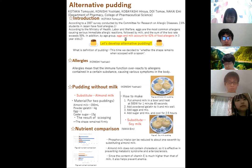They are almond milk pudding and soy milk pudding. The ingredients for two almond milk puddings are 200ml almond milk, 4g powdered gelatin, 1 egg and 15g caster sugar. Next, I will explain how to make it. First, put almond milk in a bowl and heat at 500W for 1 minute 40 seconds. Second, add powdered gelatin to it and mix well. Third, add egg and mix. Fourth, add caster sugar and cool for two and a half hours.